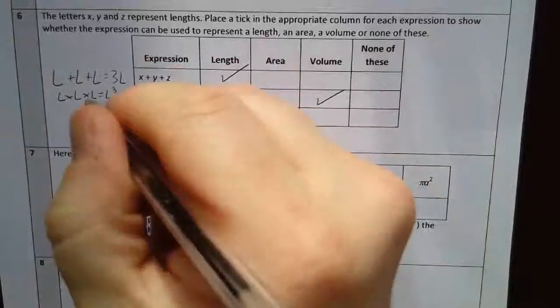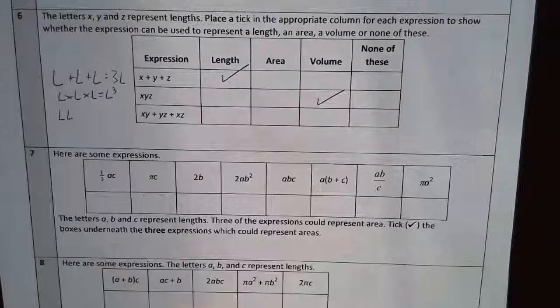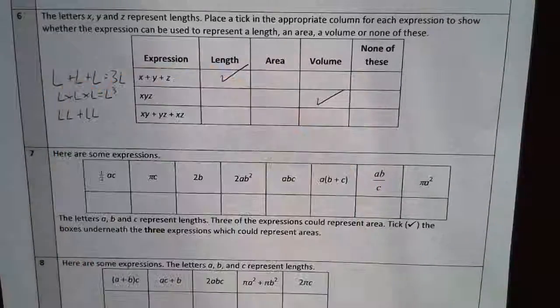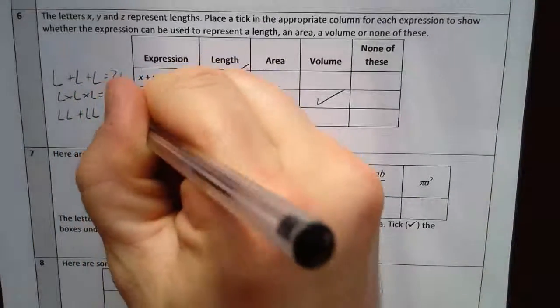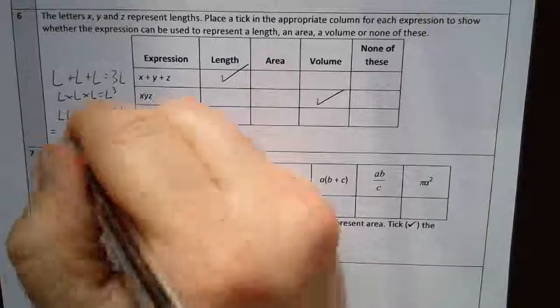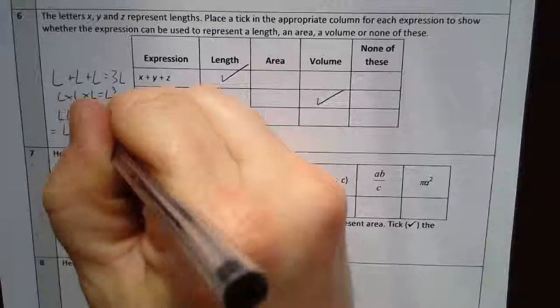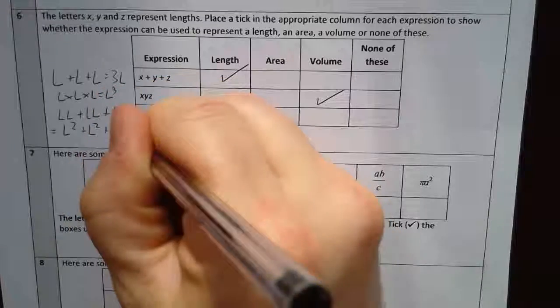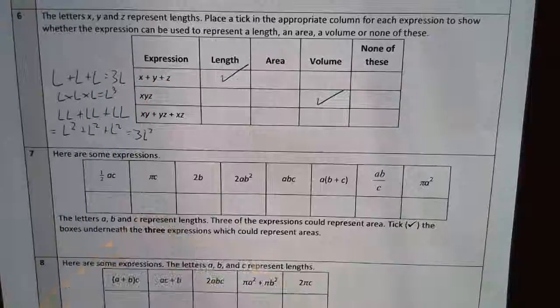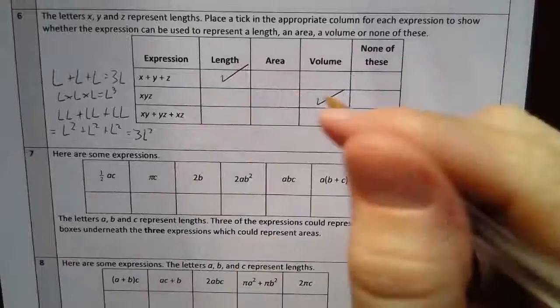Okay, and this is a length times a length, plus a length times a length, plus a length times a length, which is essentially a length squared plus a length squared plus a length squared, which is three times a length squared, which is just an area.